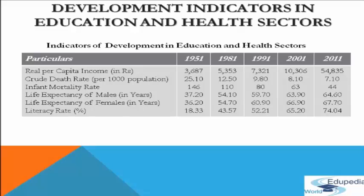Now we come to development indicators in the education and health sectors. To understand this topic, let us analyze some of the indicators of development in the education and health sectors with the help of the following table, which covers the years 1951 to 2011 and shows development in both sectors.